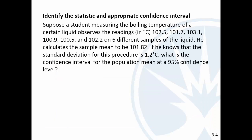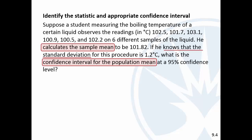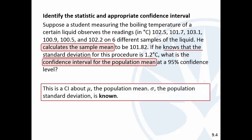Let's look at these examples and try to identify what the confidence interval is going to be for — is it a mean, a proportion, or a standard deviation? We've got some boiling temperature of a liquid with six different measurements. We calculate the sample mean, and from prior experience we know the standard deviation is 1.2. We're going to find a confidence interval for the population mean — so this is a CI about the population mean where the standard deviation is known, making it a Z statistic.